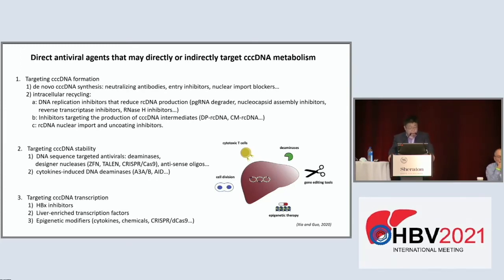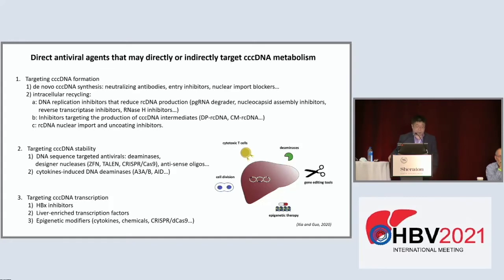The third strategy targets cccDNA transcription, which is the major function of cccDNA in the HBV life cycle. HBX has been shown to be important to maintain cccDNA transcription, so an HBX inhibitor is warranted. Liver-enriched transcription factors — which HBV uses, explaining its liver tropism — are also targets. Additionally, since cccDNA is a histone-decorated mini-chromosome, cytokines, chemicals, or CRISPR defective Cas9 fused with epigenetic modifiers have potential to shut down cccDNA transcription.